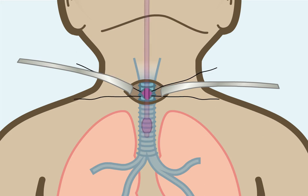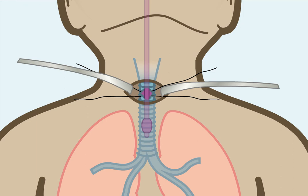This surgically created opening in the trachea is also called a tracheostomy. In some cases, the surgeon can choose to stitch the tracheostomy wall to the skin, to help stabilize it.